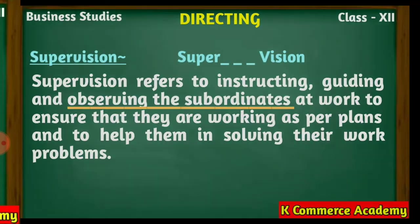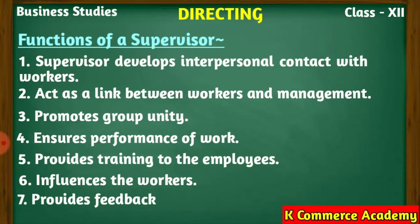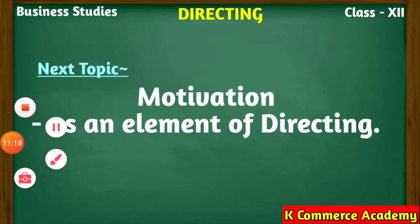So these were the seven functions that a supervisor performs for his respective subordinates. As one of the elements of directing, supervision is the task of instructing, guiding, and observing the subordinates while they are working, and guiding them if they make any mistakes — a function to be performed by each and every manager in the organization. I hope you all have understood all the points clearly. The next video lecture will be on the second element of directing — motivation. If you find the video useful, hit the like button and share it.